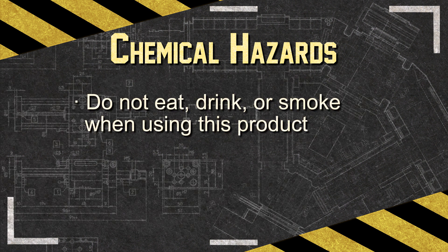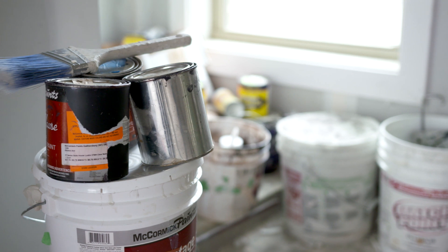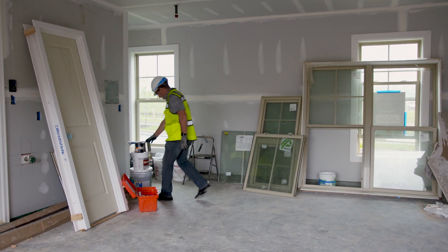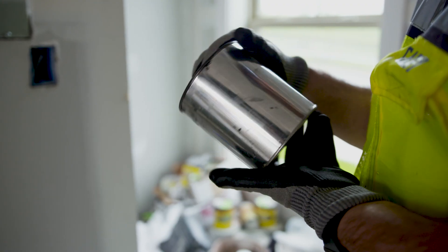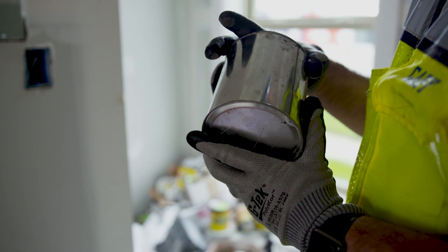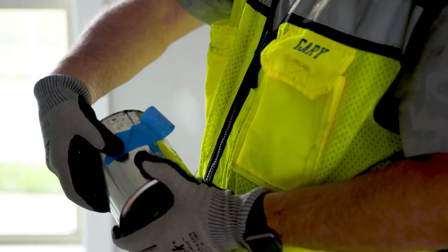Labels also include precautionary statements like do not eat, drink, or smoke when using this product, and lastly, the name, address, and phone number of the responsible party. It's important to ensure that all containers on the job site are clearly labeled so you know exactly what is in the container. A battered or old label might be hard to read; if this is the case, make sure to replace the existing label with a new one.